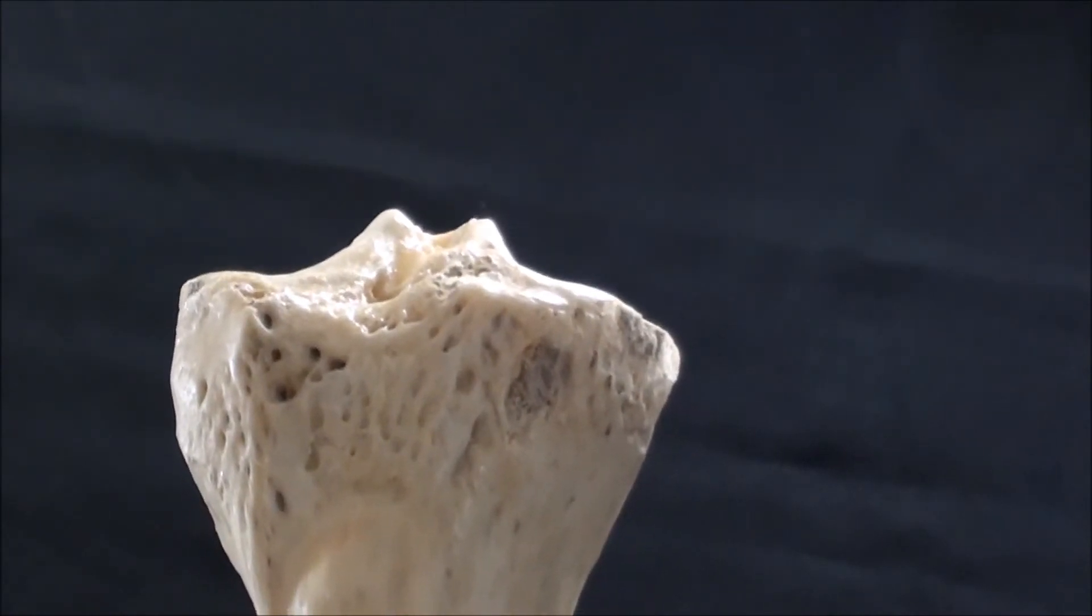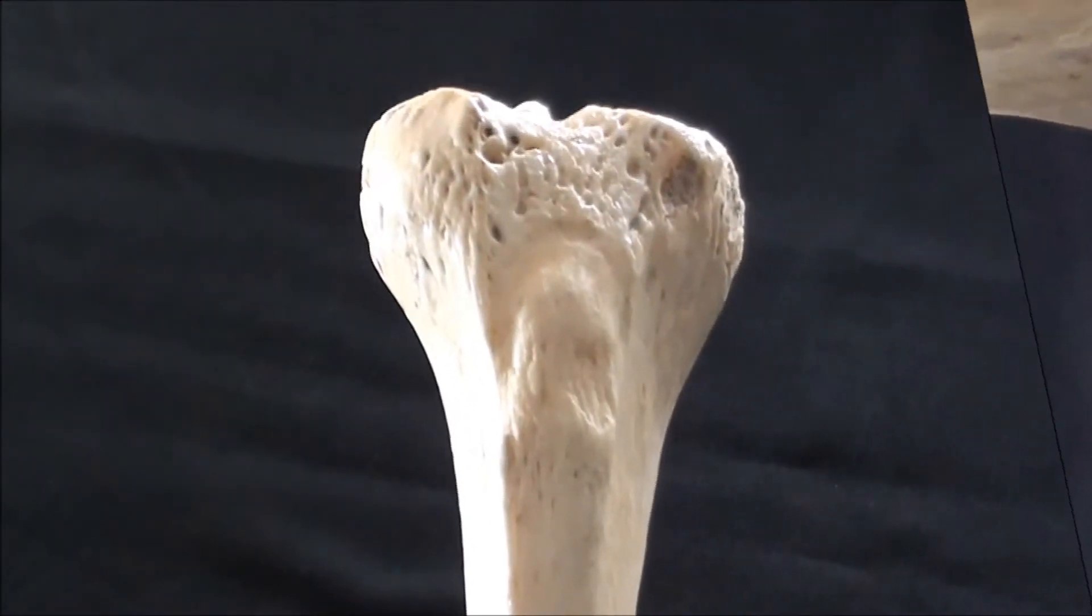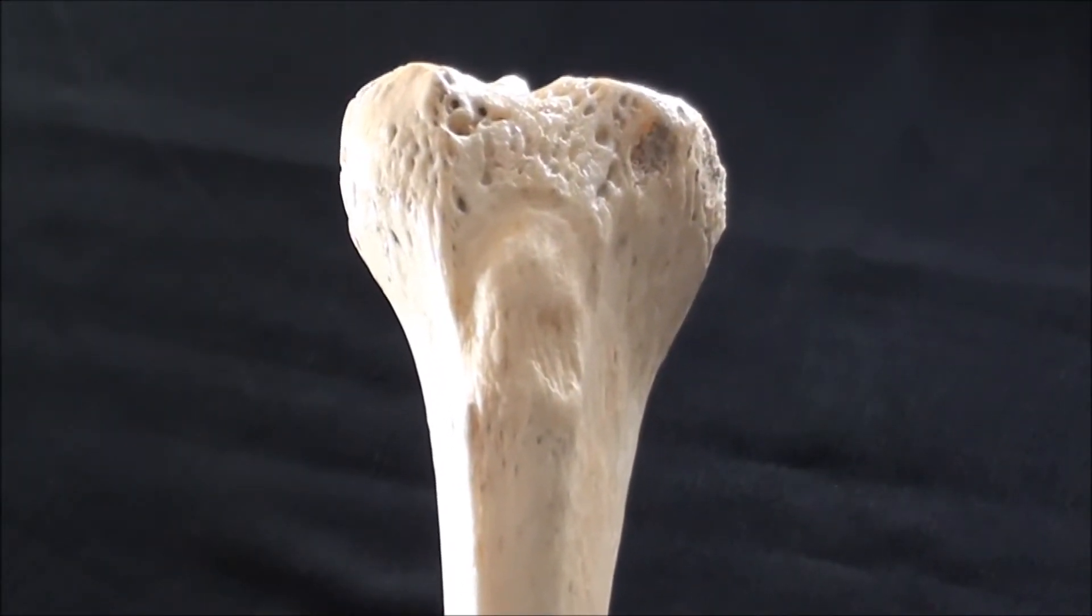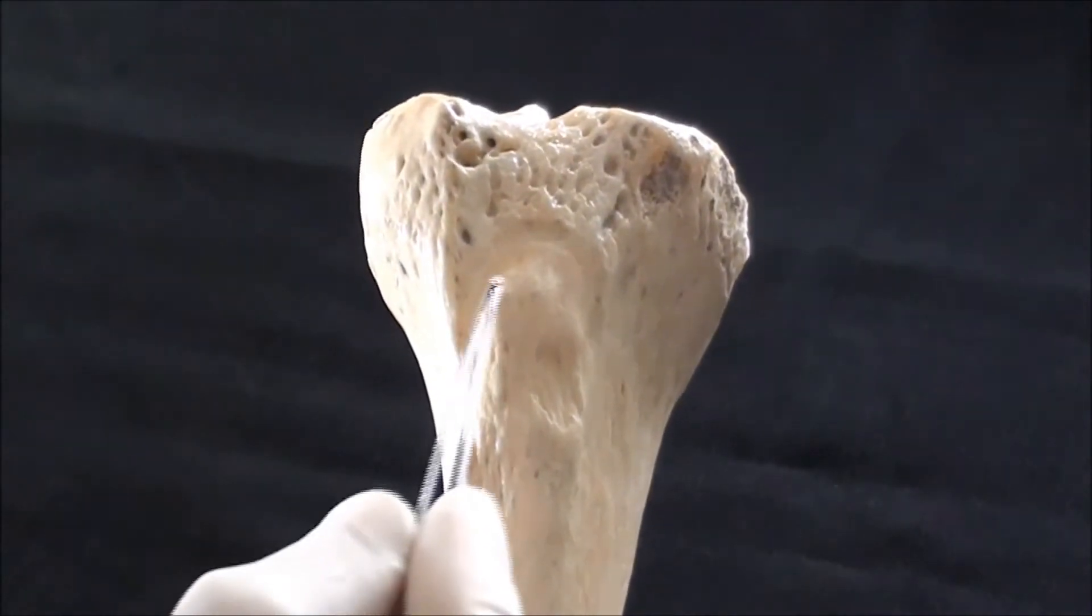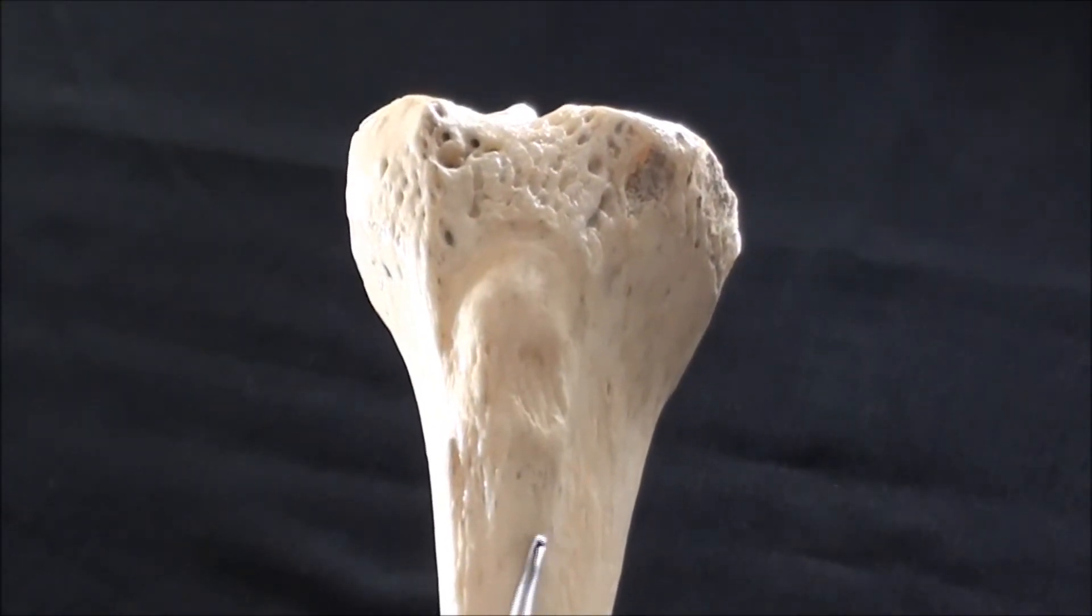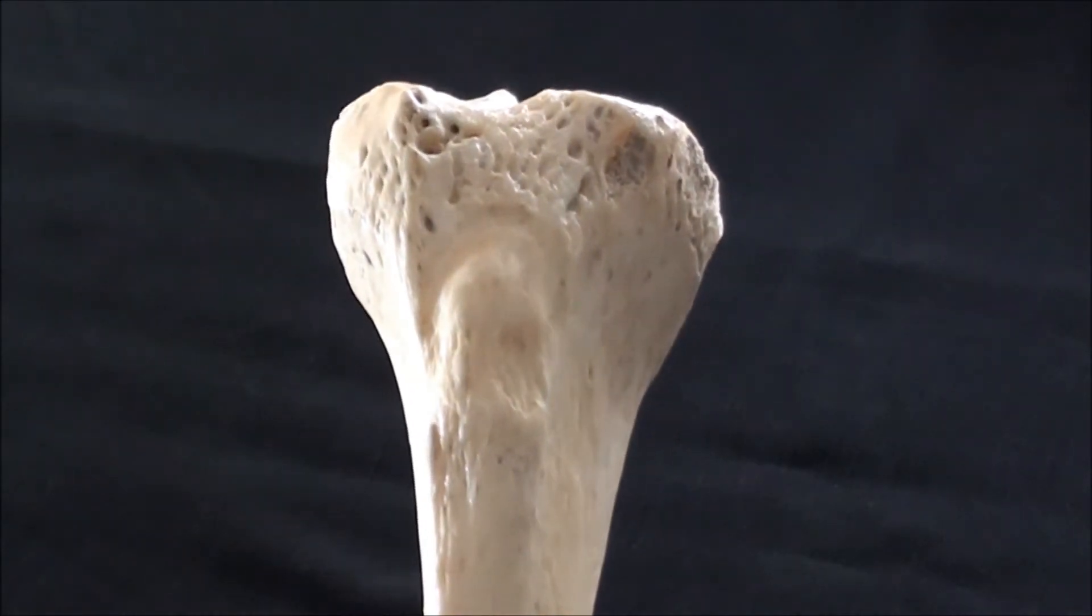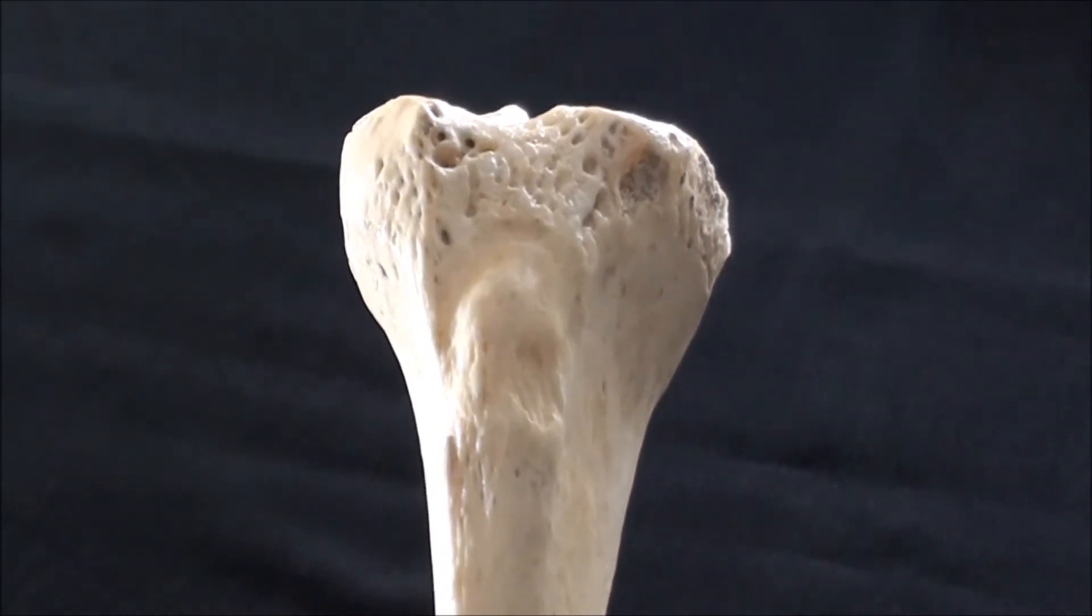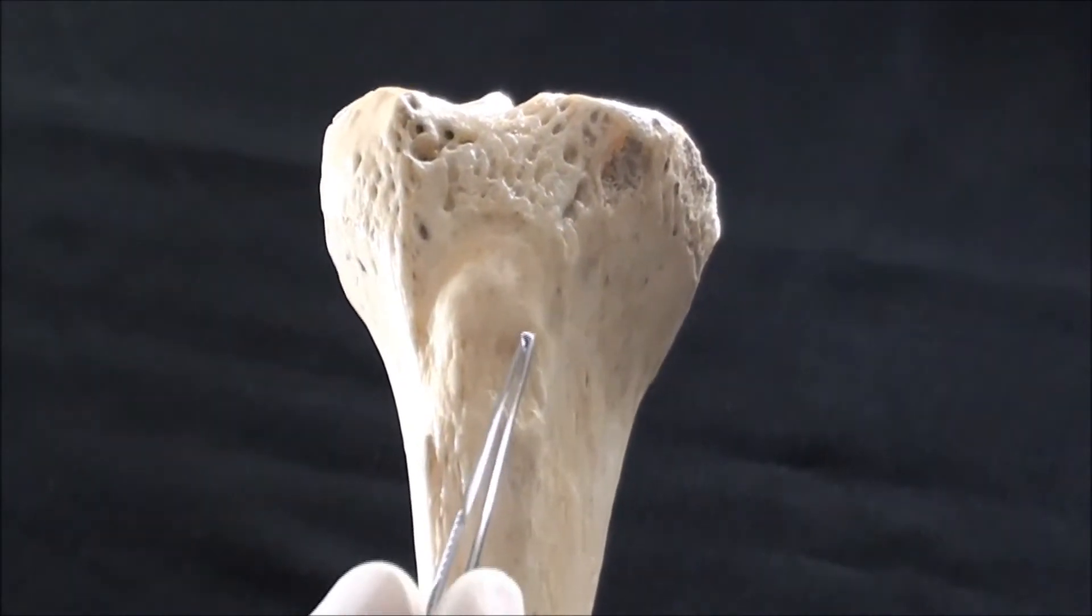Anteriorly on the tibia, just inferior to the condyles, we're seeing this massive elevated area which is known as the tibial tuberosity. The tibial tuberosity could be interpreted in two different forms. One is to consider it being the attachment for the patellar ligament.